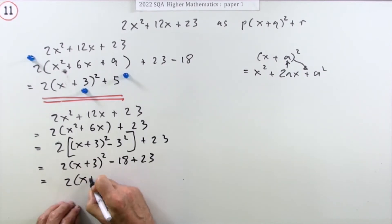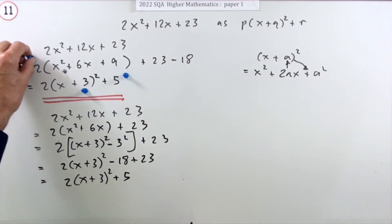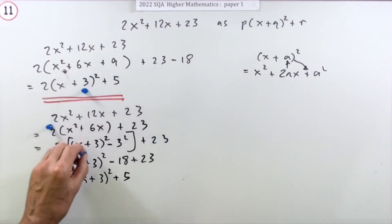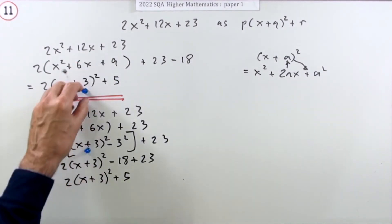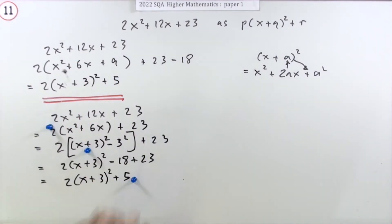So now finish it off with 2(x+3)² + 5 as before. Marks were the same way: you've got one mark for taking out the factor of two, one mark for forming the x+3, and the last mark was just for all the jiggery-pokery to get that five.